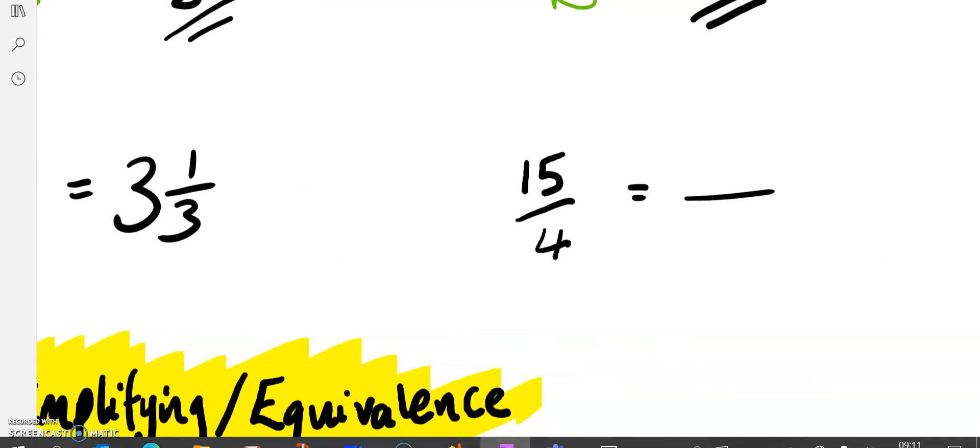This one here, 15 over 4. So it's going to be something over 4. How many 4s go into 15? I think it's 3 because 4 times 3 is 12 and I'd have a remainder of 3. So it's 3 and 3 quarters.